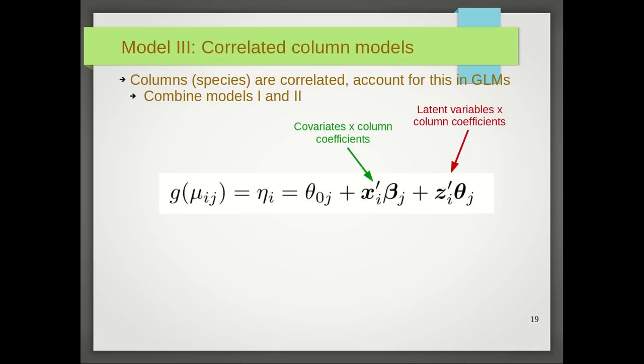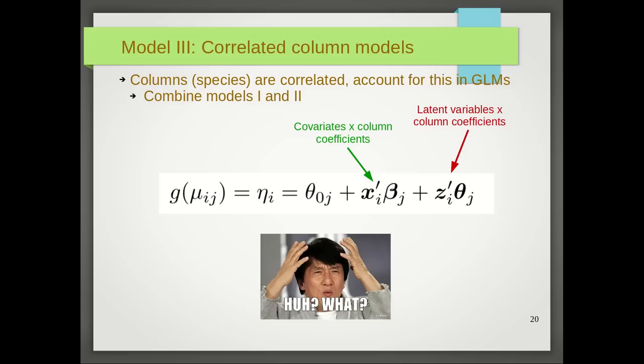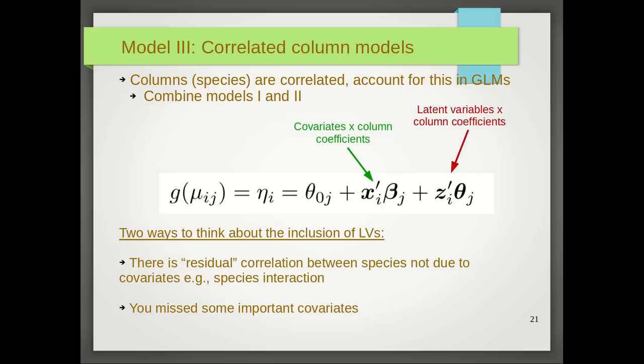The third type of model, and arguably the most interesting type of model that BORAL fits, is the correlated column model. This is whereby we assume these species are correlated and we try to account for this in the GLM framework. To do this, we actually combine models one and two, so we have the xi βj as well as the zi θj. Now you may look at this and wonder why I'm including these latent variables and what they actually do. There are two ways to think about their inclusion. The first one is that there is residual correlation between the species that is not due to covariates, for example species interaction or correlation due to phylogeny, and the latent variables provide a method of trying to model or account for this residual correlation.